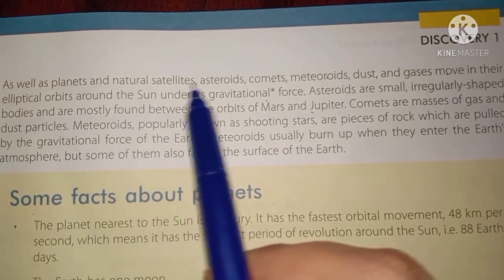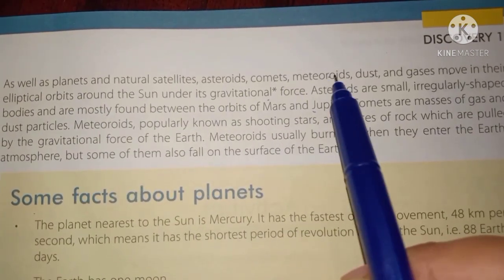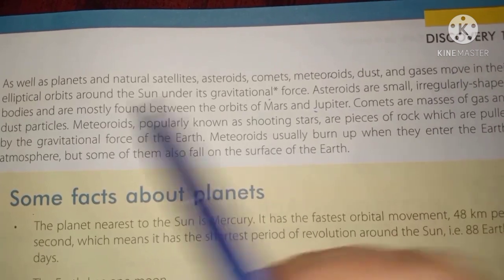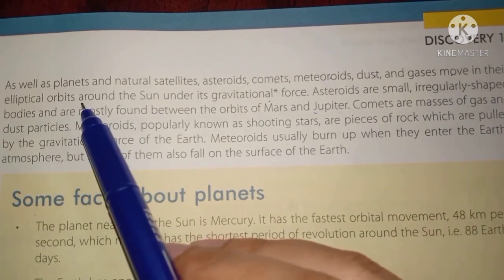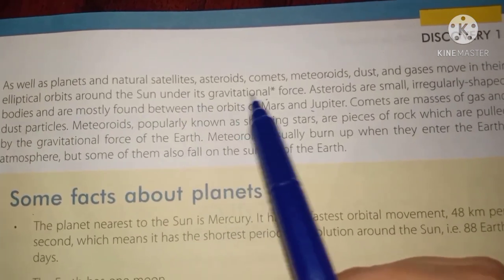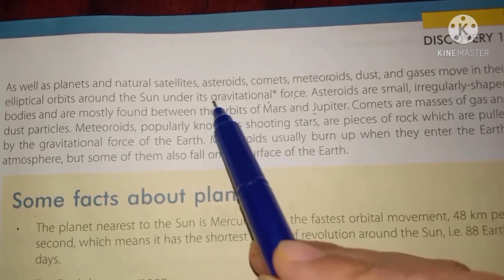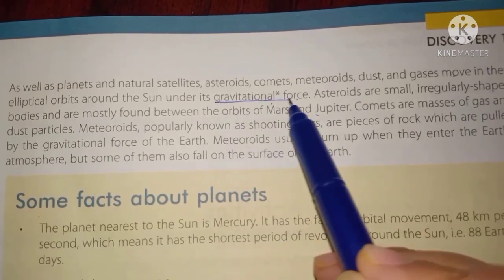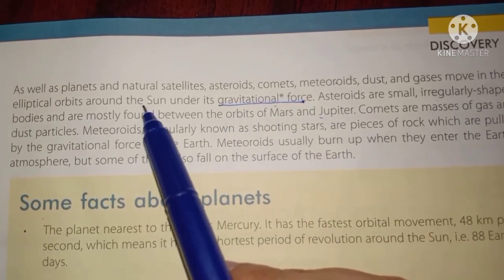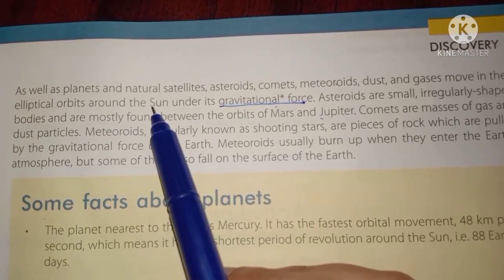As well as planets and natural satellites, asteroids, comets, meteoroids, dust, and gases also move in their elliptical orbits around the sun under its gravitational force. Gravitational force is basically the gravity that attracts the planets towards the sun.